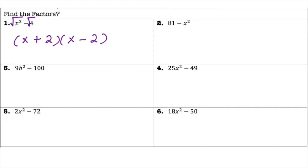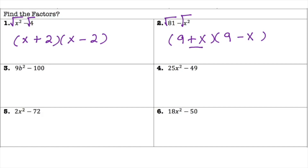For number 2, check that both terms are perfect squares and that they are being subtracted — they are. So we use the difference of squares method, setting up parentheses with plus and minus. The square root of 81 is 9 and the square root of x squared is x, giving (9 + x)(9 - x). The plus and minus reflect the positive and negative x when taking the square root.